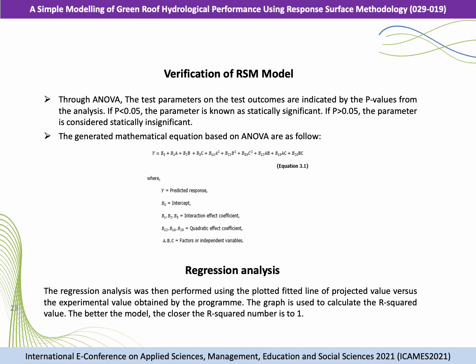Through ANOVA, the test parameters on the test outcome are indicated by the p-values from the analysis. If p is smaller than 0.05, the parameter is considered statistically significant. If p is more than 0.05, the parameter is considered statistically insignificant. The general mathematical equation based on ANOVA is shown in the equation. The regression analysis was then performed using the plotted fit line of projected value versus the experimental value. The graph is used to calculate the R-squared value — the closer the R-squared number to 1, the better the model.